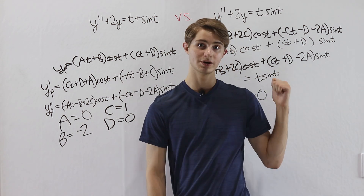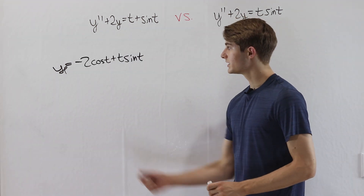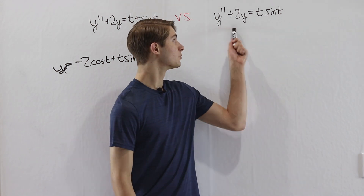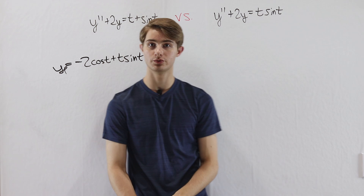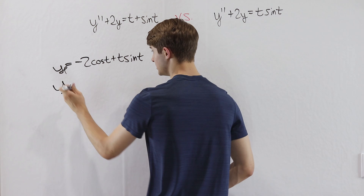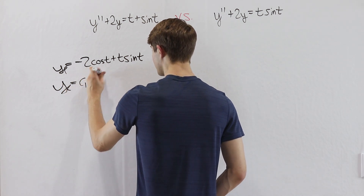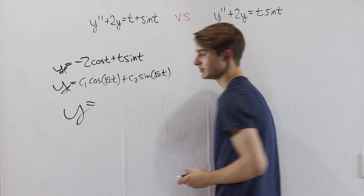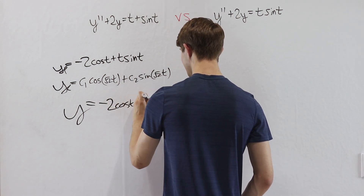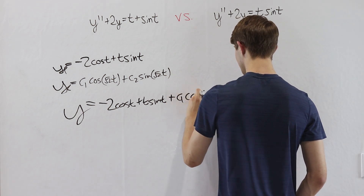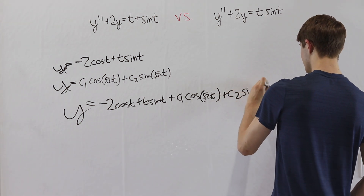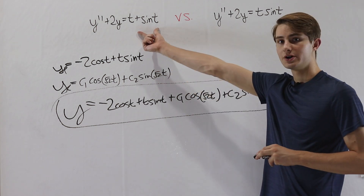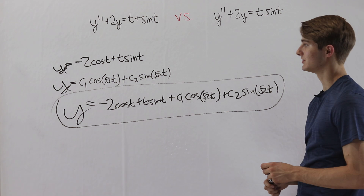Plugging in b equals negative 2 and c equals 1 (a and d were 0), our particular solution is negative 2 cosine t plus t sine t. The complementary solution is the same as before — c1 cosine of root 2t plus c2 sine of root 2t — since the left side is identical. The final answer is y equals negative 2 cosine t plus t sine t plus c1 cosine root 2t plus c2 sine root 2t. To summarize: with undetermined coefficients, if we add the parts we add the guesses; if we multiply the parts we multiply the guesses.